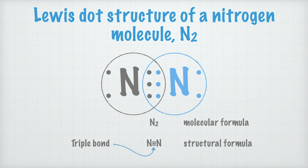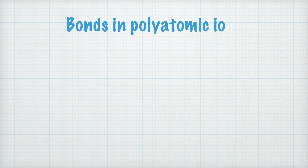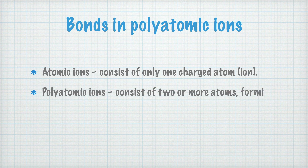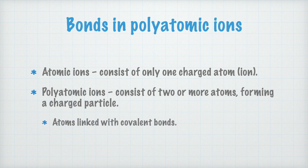In the final part of this video, I'd like to show you why polyatomic ions have the charge that they do, by looking at the bonds in polyatomic ions. Atomic ions consist of only one charged atom, or rather ion. Polyatomic ions consist of two or more atoms, and together they form a charged particle. Between ions in an ionic compound, there are ionic bonds — but between the atoms in a polyatomic ion, there are covalent bonds.